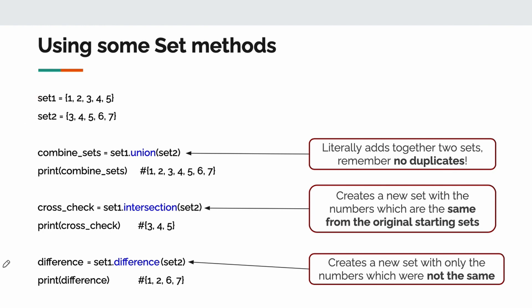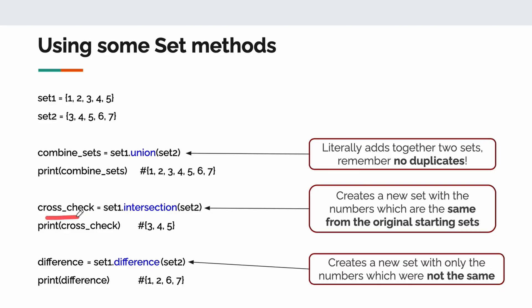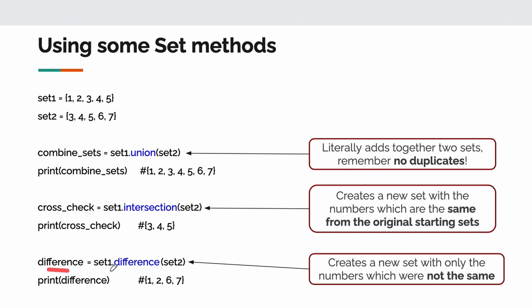I have set one and set two. Pause the video, look at the numbers — what do they have in common? What's different about them? I create a new set called combine sets. I take set one and combine it with set two using union. When I print off my new set, notice it's only printing three, four, five one time because those were duplicates in the two sets. I have one called cross check using the intersection method — the ones that are the same in both sets are three, four, and five. This brings us to difference — I'm checking what is different between set one and set two. The answer is going to be one, two, six, and seven, because set one and set two do not share any of those numbers. That is why they're different.